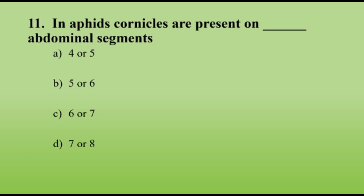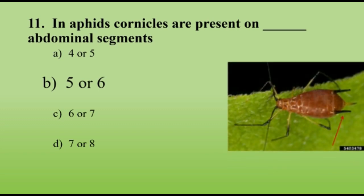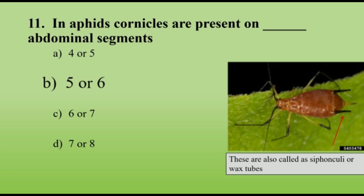In aphids, cornicles are present on which abdominal segments? They are present on either the fifth or sixth abdominal segments, as seen here. These cornicles expel a waxy substance that acts as an alarm pheromone, protecting them from predators. Cornicles are also called siphunculi or wax tubes.